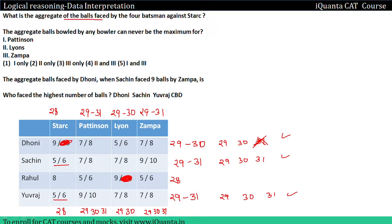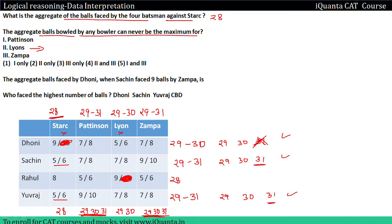Question: What is the aggregate of the balls faced by the 4 batsmen against Stark? Against Stark, we can see how many balls were faced in total — the answer is 28. Also, the aggregate balls bowled by any bowler can never be the maximum. We know that 31 will come for either Lion or Stark as the maximum, so Stark's maximum or Lion's maximum applies here.